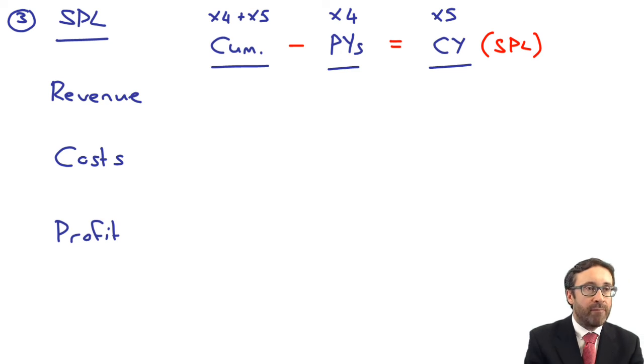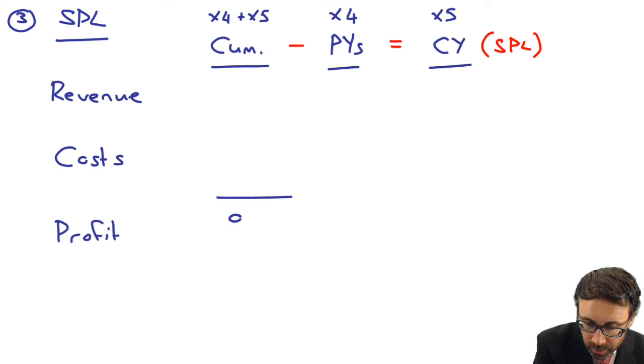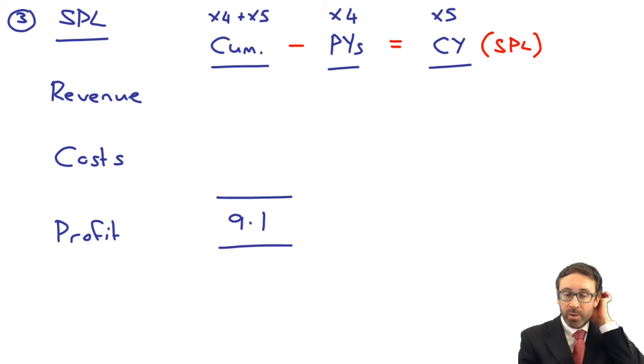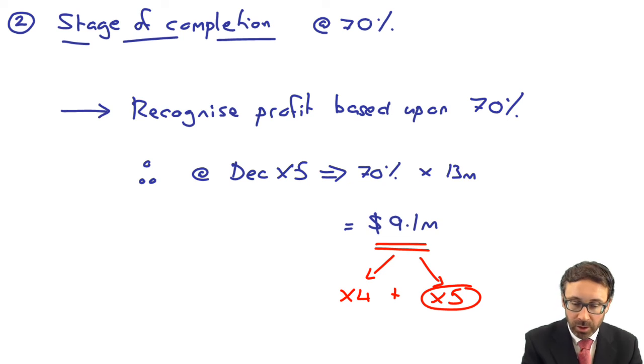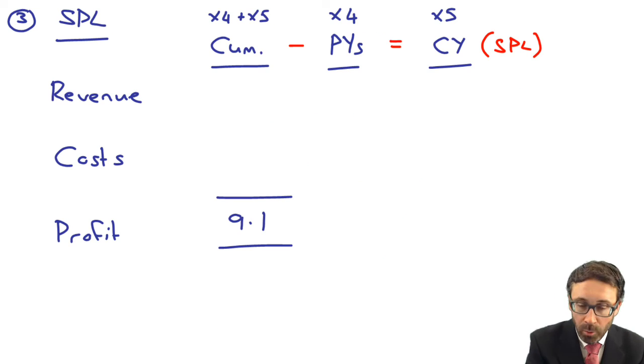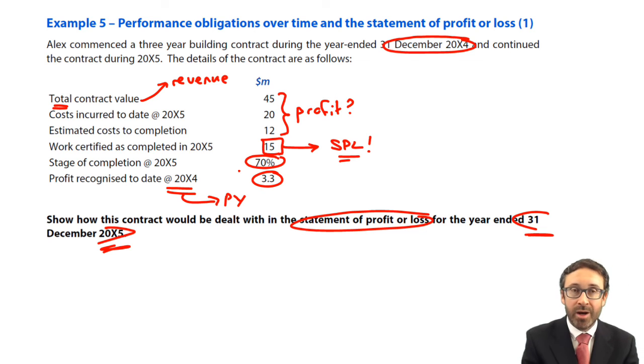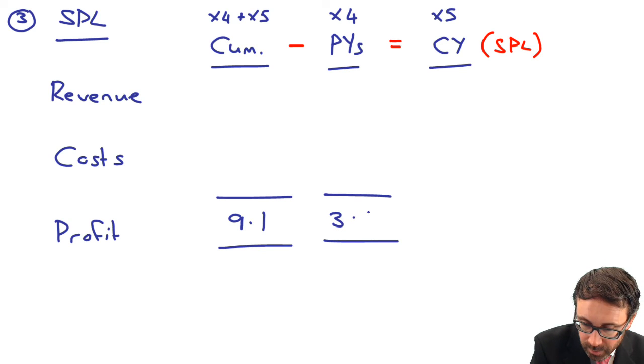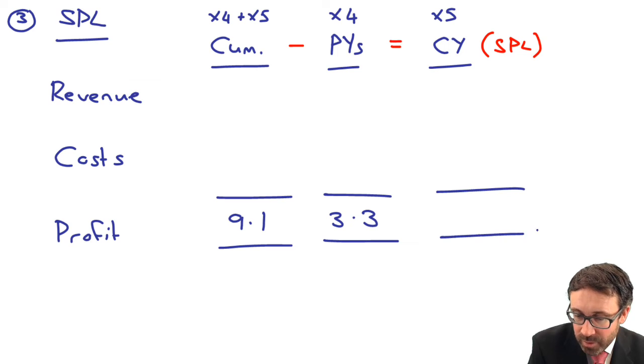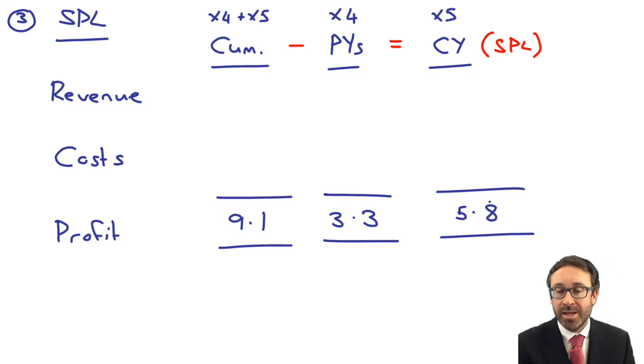So what information have we got? Well, we've calculated that the profit cumulatively for X4 and X5 is that $9.1 million, isn't it? What we're told as well within the question, if we go back into the question, we can see there that the profit recognized in the prior years up to 20X4 is 3.3. So that's the amount of profit that we recognized in X4, i.e. last year. So this year, what we need to recognize on the statement of profit or loss is 5.8 billion. Everybody happy with that?